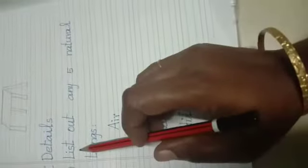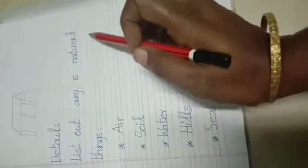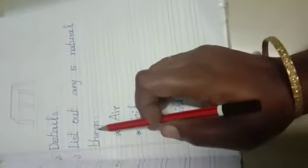Then list out any five natural things. L-I-S-T list, O-U-T out, any five natural things. N-A-T-U-R-A-L natural, T-H-I-N-G-S things. List out any five natural things.